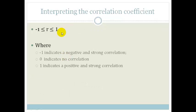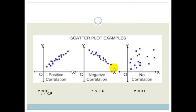Now what does this mean? From that horrible equation we can get r and r is going to always fall between 1 and minus 1. If r is very close to minus 1 then it has a negative and strong correlation. If it's 0 then there's no correlation, whereas if it's 1 it indicates a positive and strong correlation. What does that mean? Let's look at our graphs.